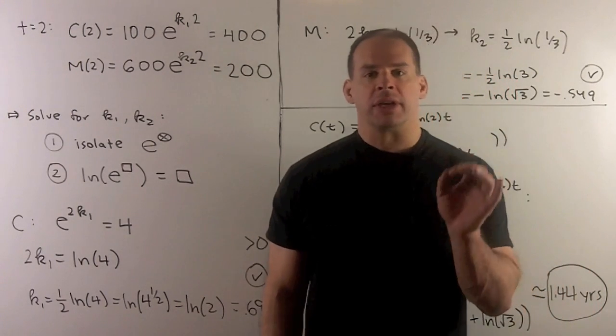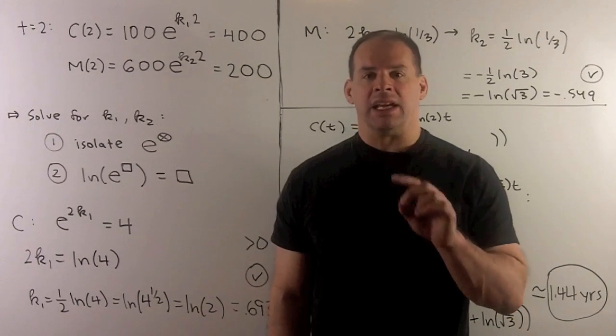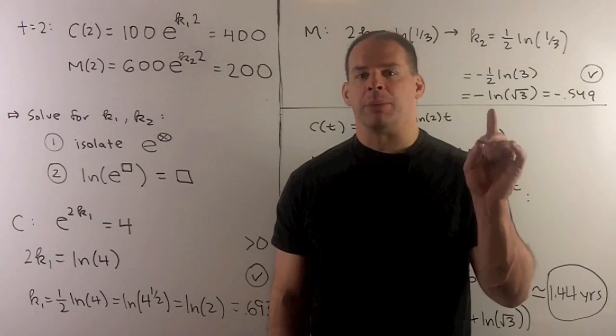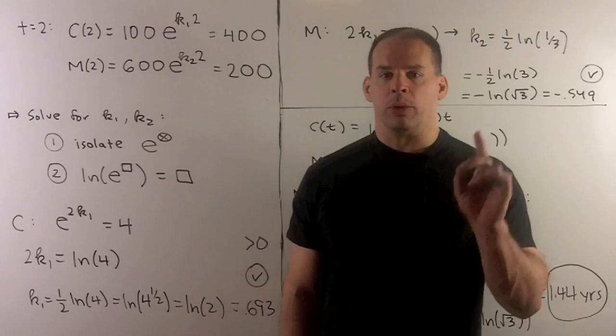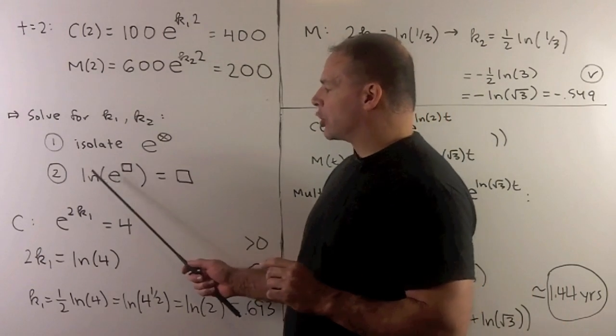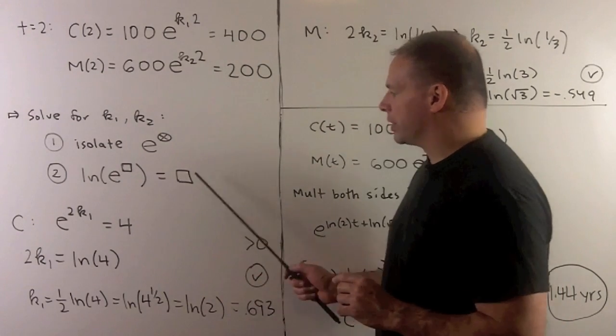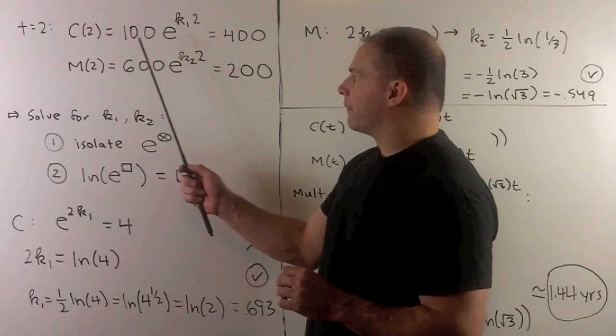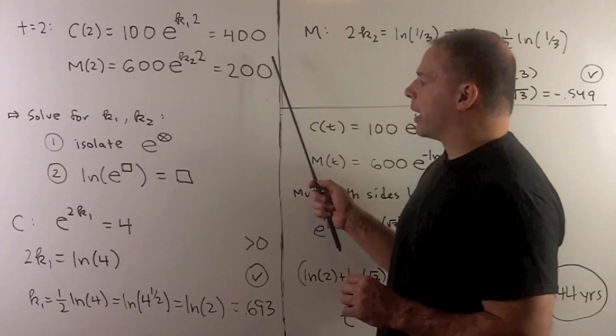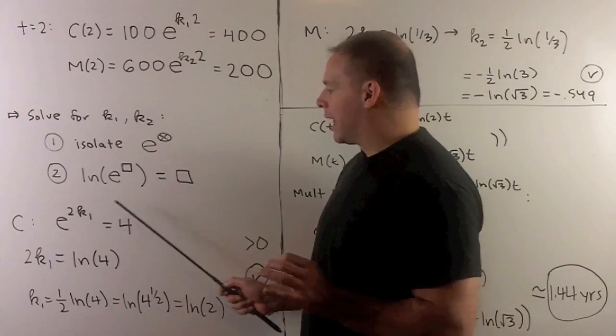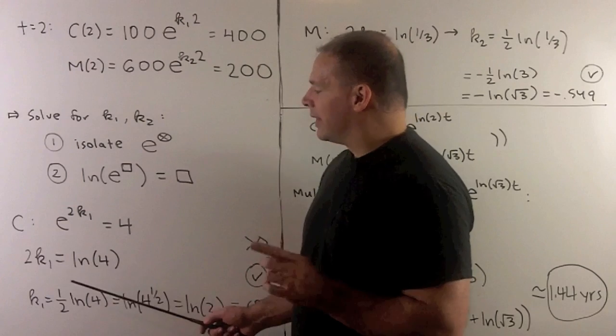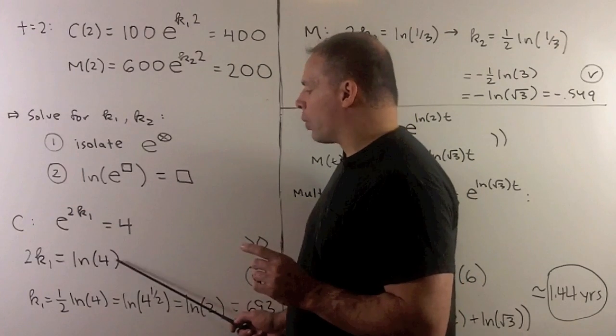So to solve for k₁ and k₂, I need to isolate the exponential and then apply a natural log. If we apply a natural log, the natural log of e to the box is just equal to box. For the first one, divide both sides by 100. We apply natural log to both sides. That gives us 2k is equal to natural log of 4.